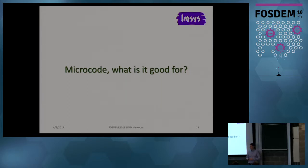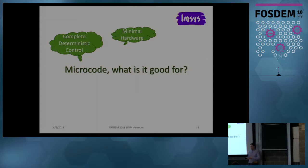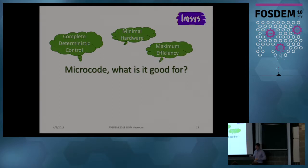There are a few things we value in microcoding. First, we have complete and deterministic control over what the processor is doing. Our hardware — the processor core — can be minimal since all the complex control logic is implemented in microcode. There is no need for deep pipelines, cache hierarchy, out-of-order and speculative execution, or a complex hardware state to maintain. Also, since we implement different features in microcode with direct tight control, the utilization of the actual hardware can be maximized, providing maximum efficiency.